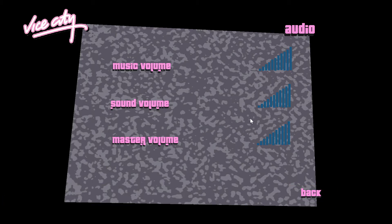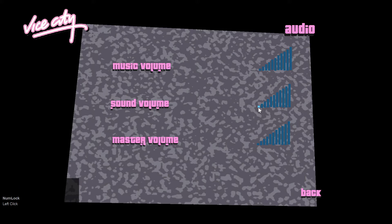Now if I go to the sound volume vertical bars, you'll notice it affects only the heartbeat sound. Listen carefully to the heartbeat sound — it's affecting the sound effects only. It will affect all the sound effects in the Sound folder, not just the heartbeat. If you have multiple sounds in that folder, it will affect all of those sounds.